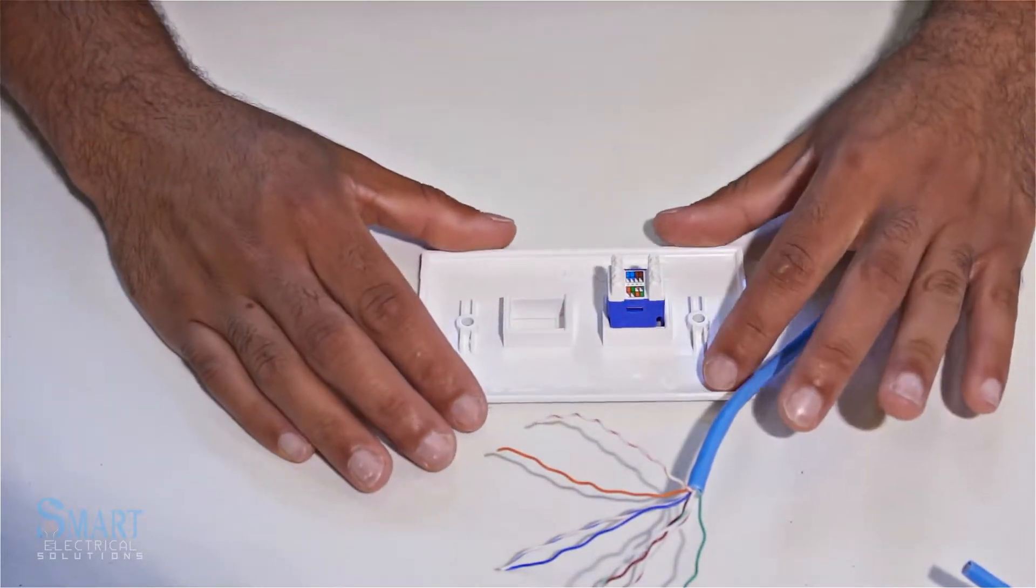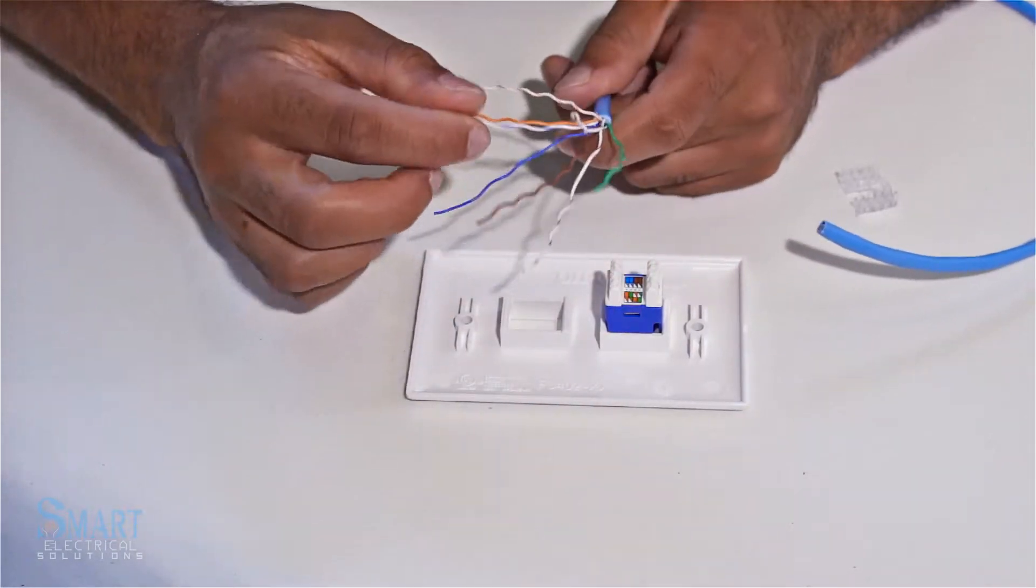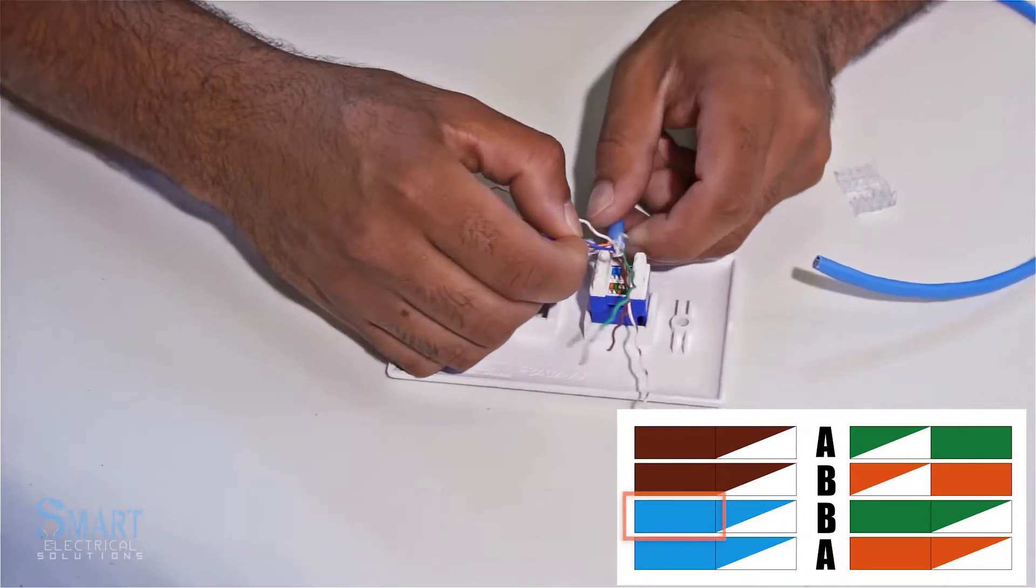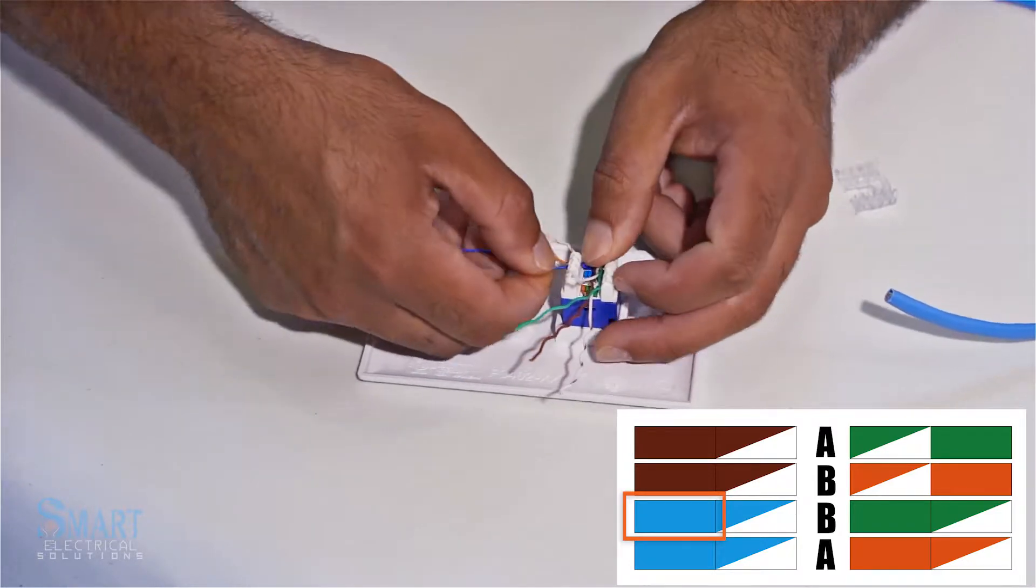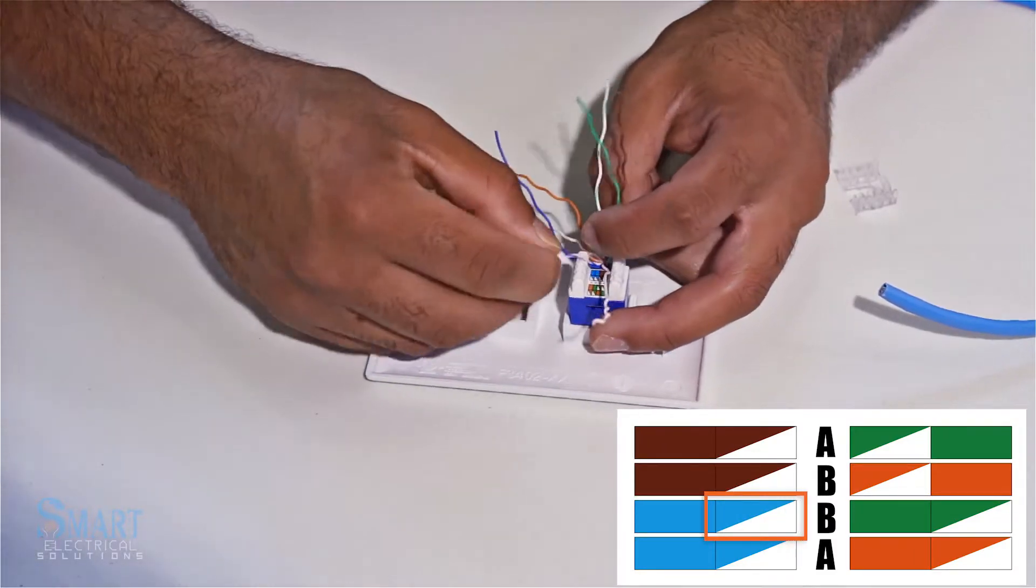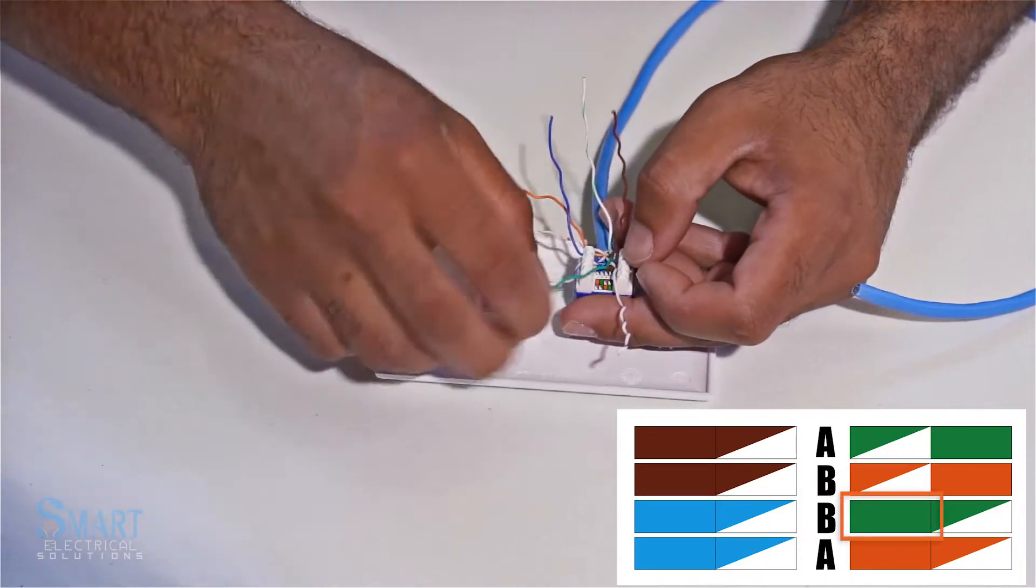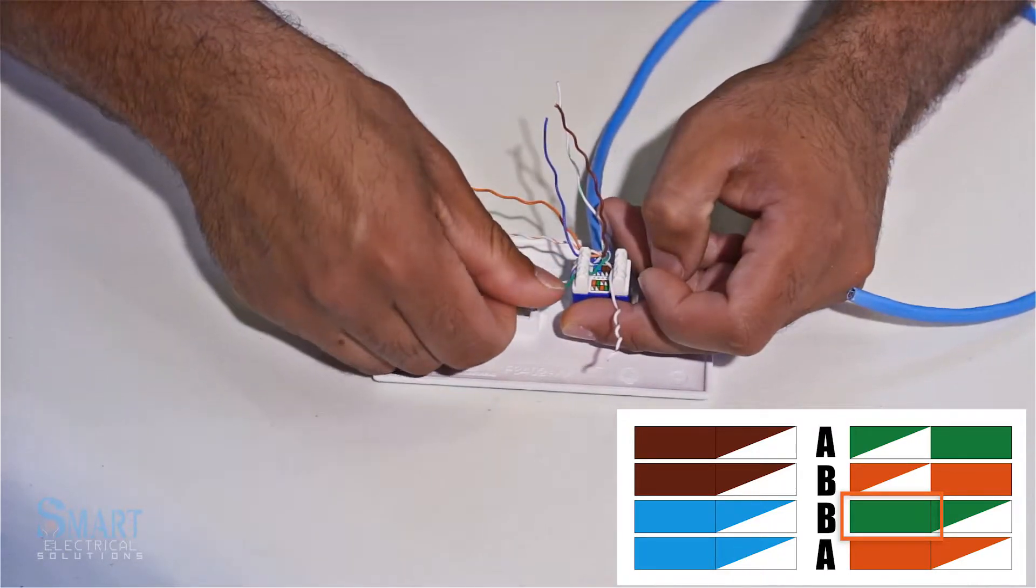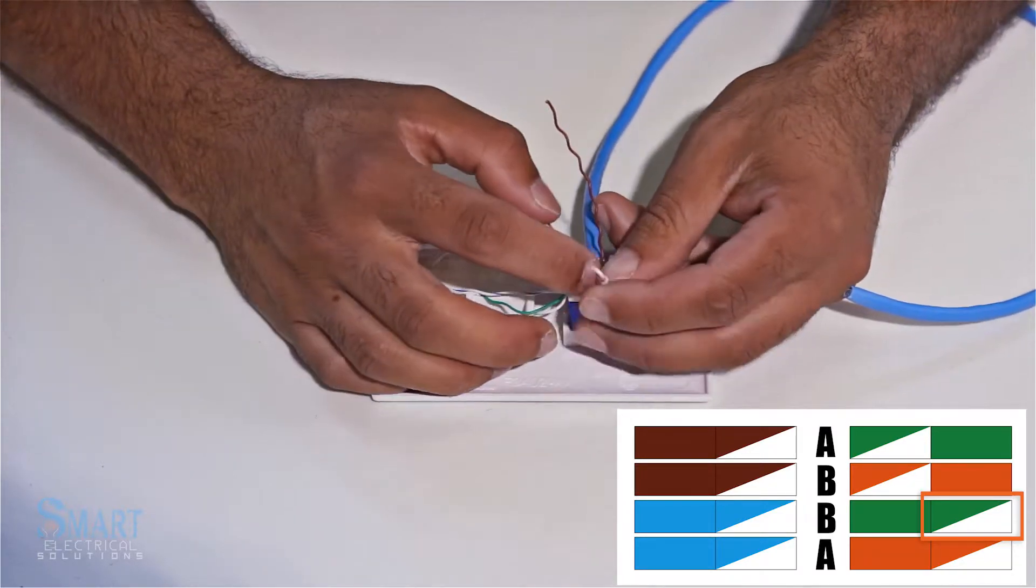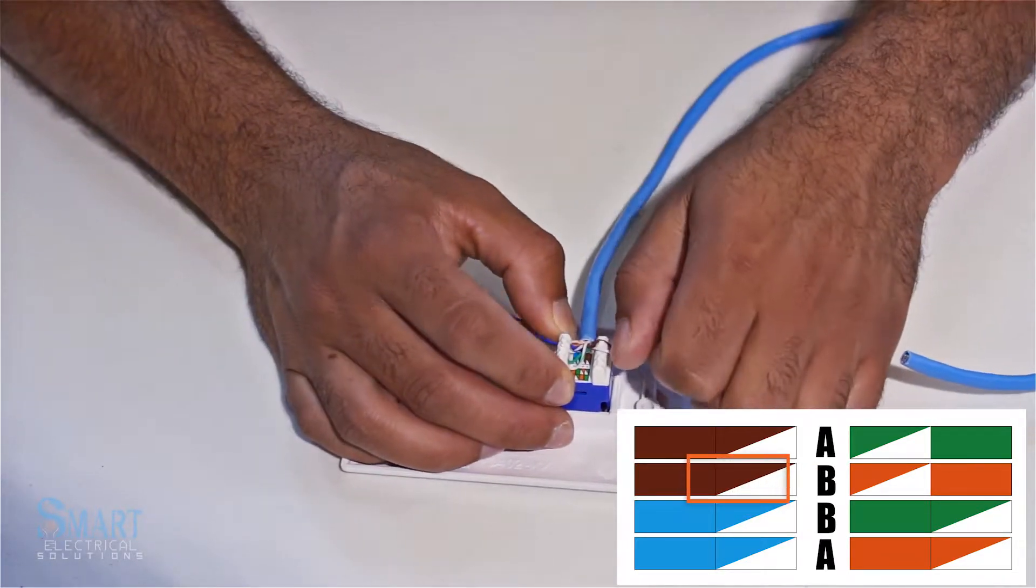Following the diagram, I usually start from the side closest to me. In this case we want to go blue, and you just use your nails and push down. So blue, then white blue, then green, white green. This side is brown, white brown.